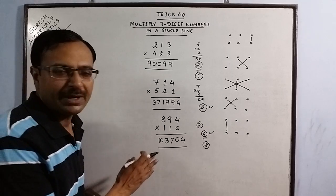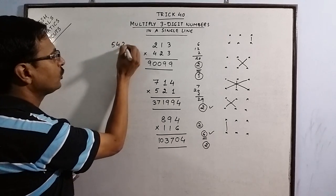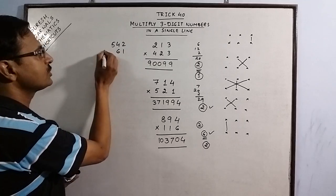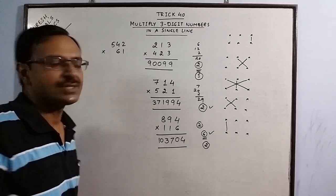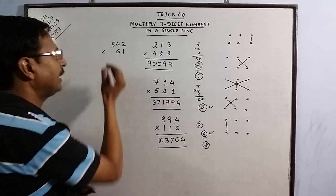One more thing I would like to supplement here is when you have to multiply 542 by 61, suppose you have the lesser number of digits in one of the numbers then you can make them equal by putting 1 zero and now you can apply this same method in order to arrive at the result.